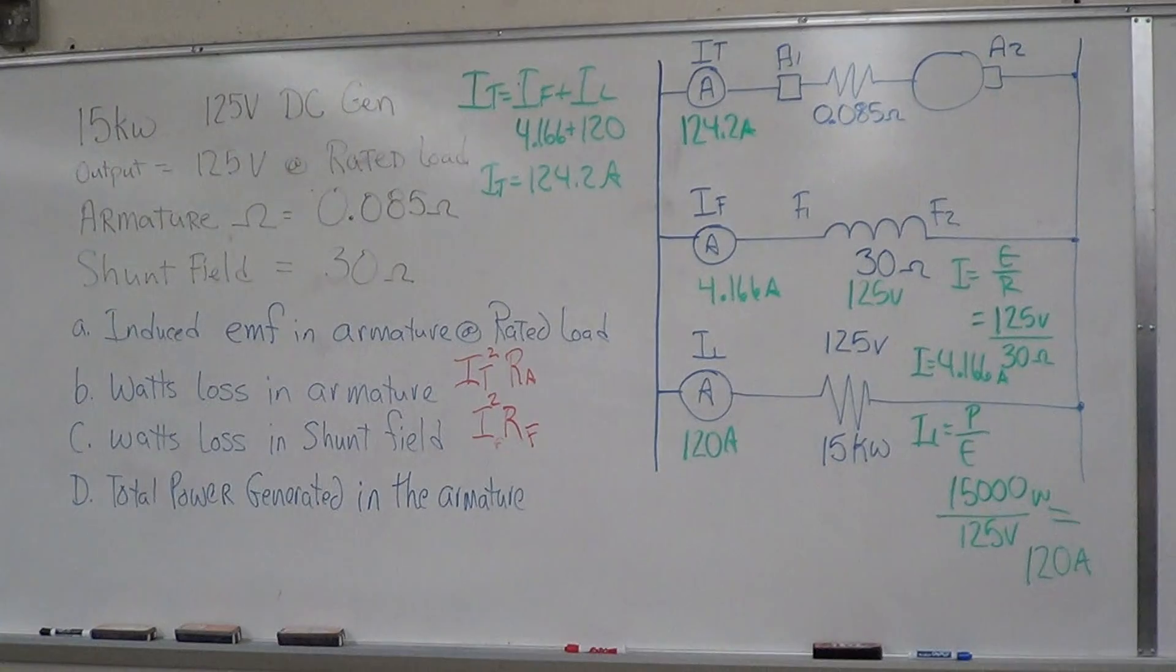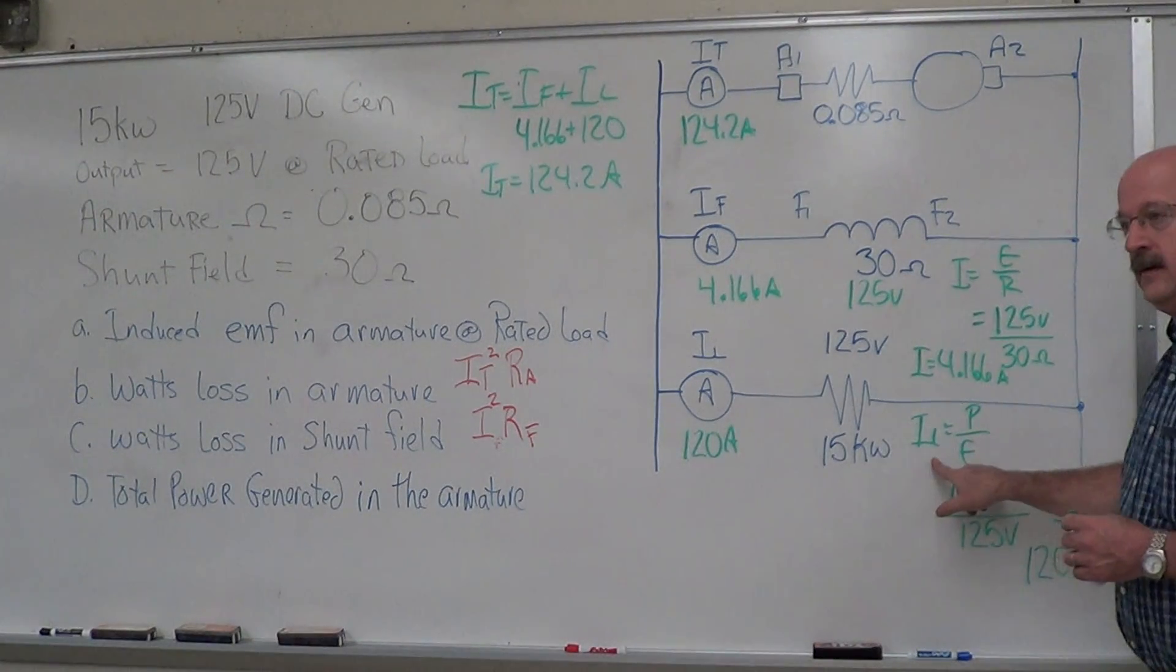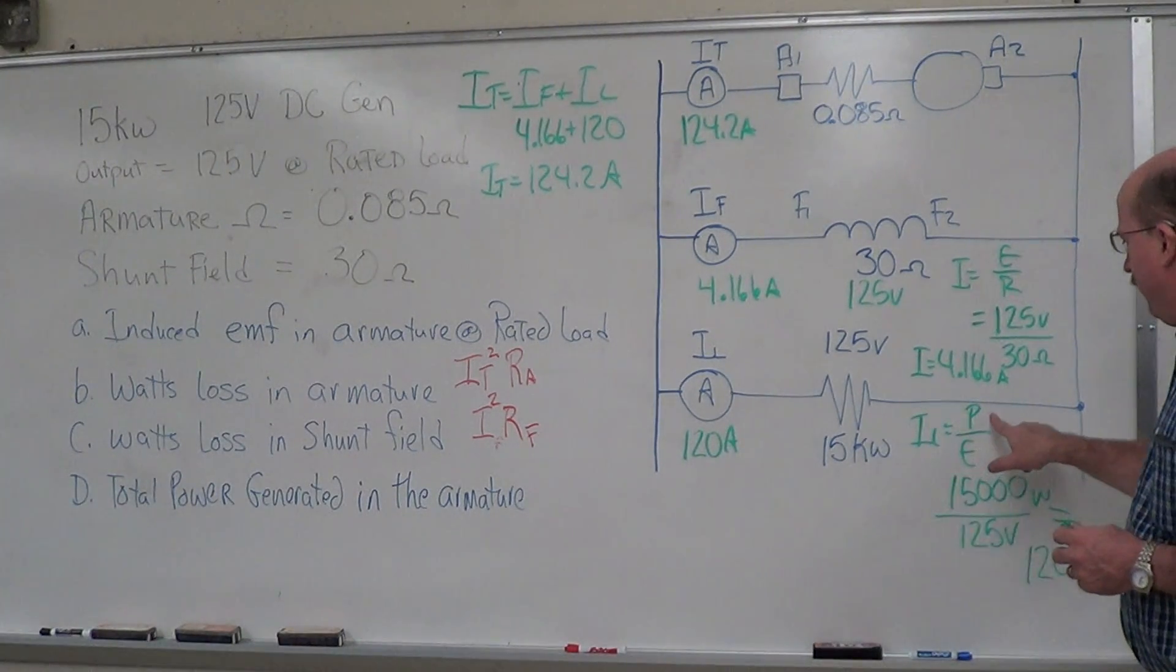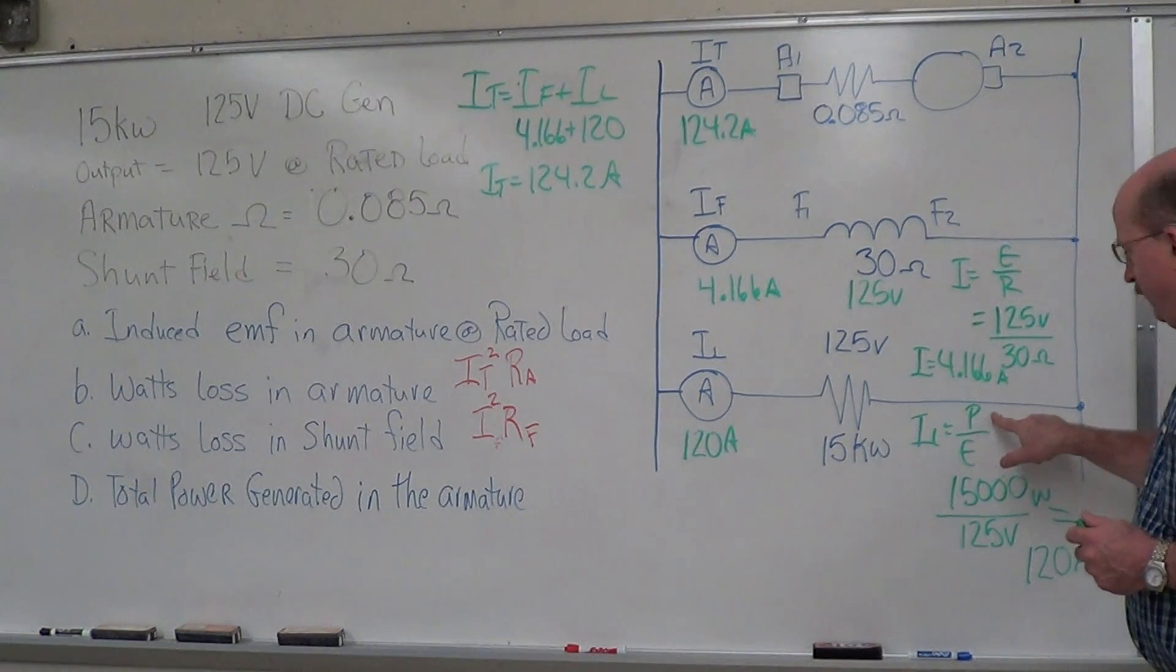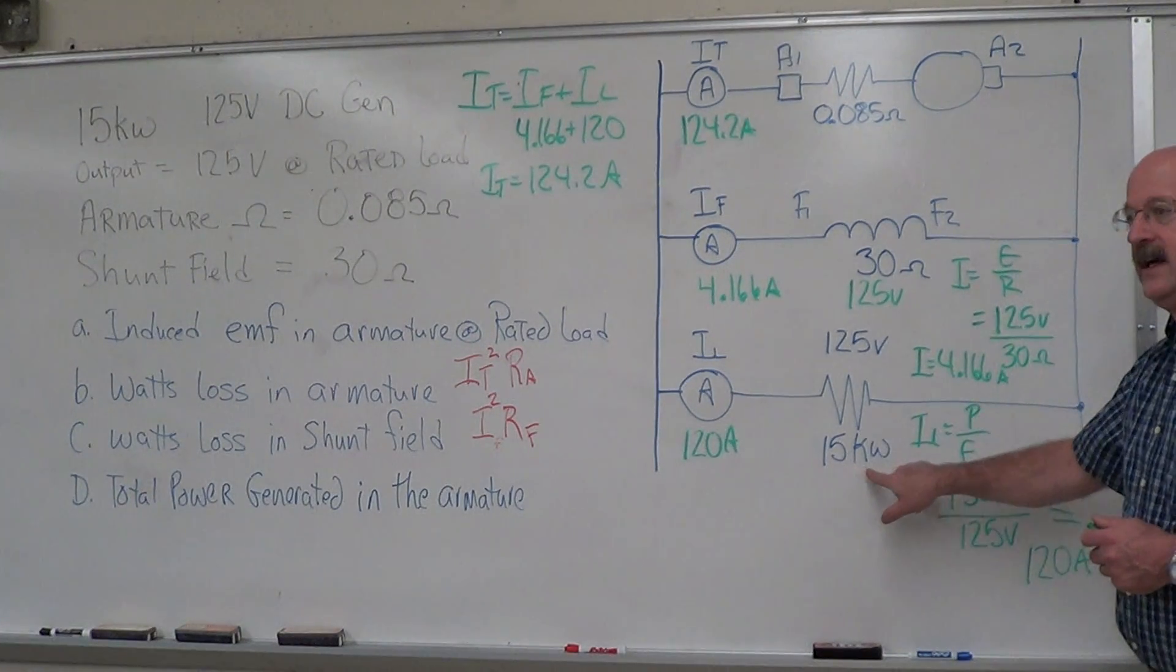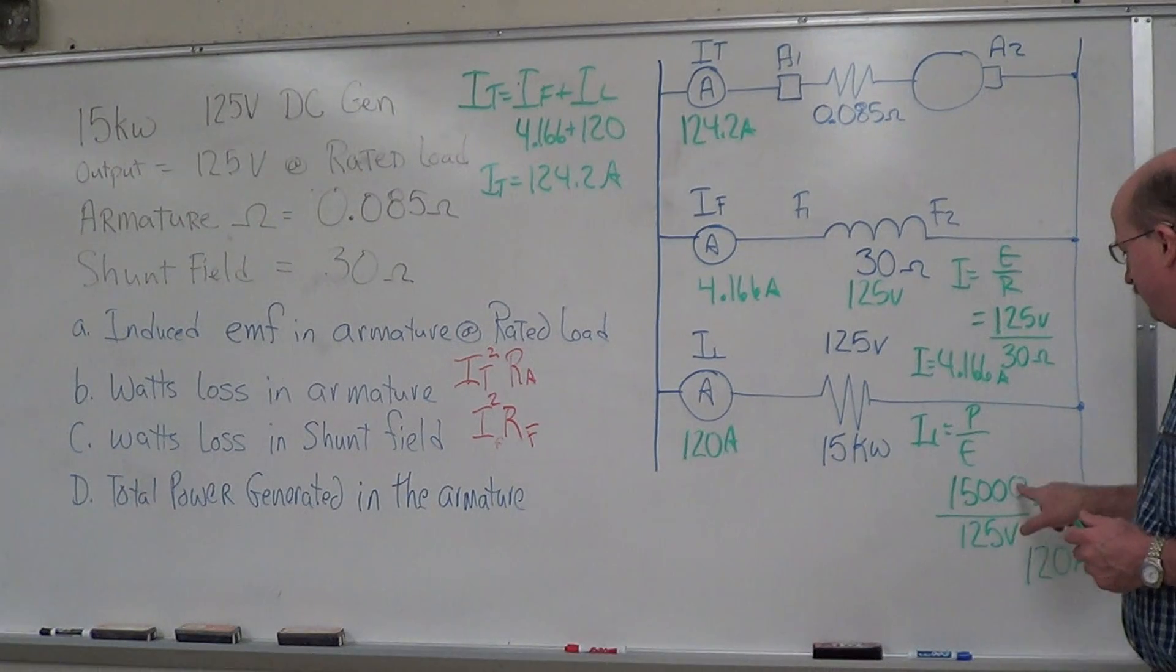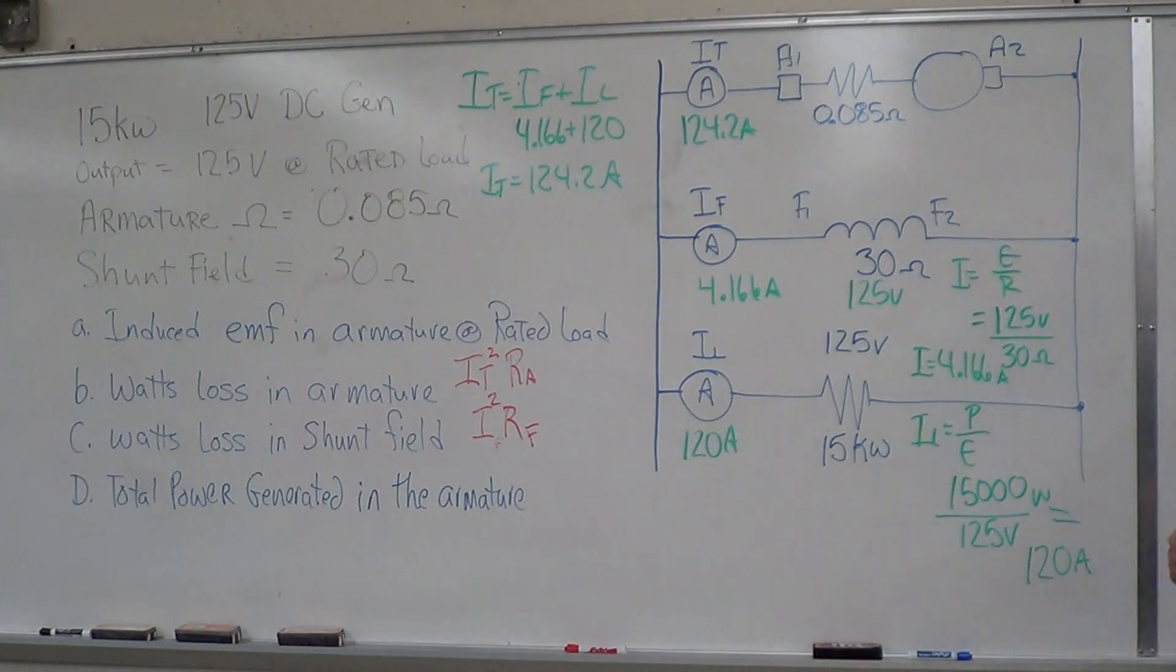On the IL, you just took 1500 divided by 125. I put 15,000. Oh, 15,000. 15 kilowatts divided by 125. That gives us our IL.